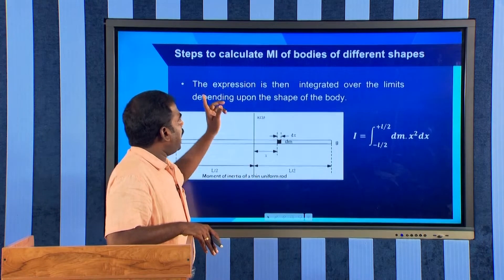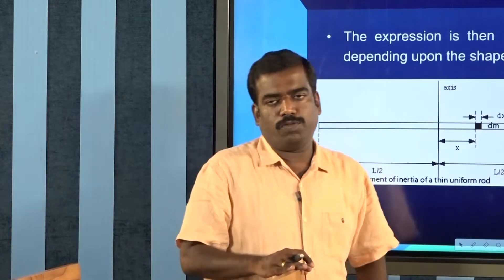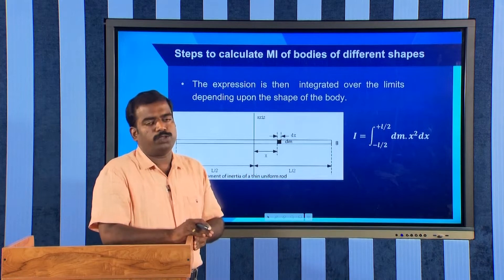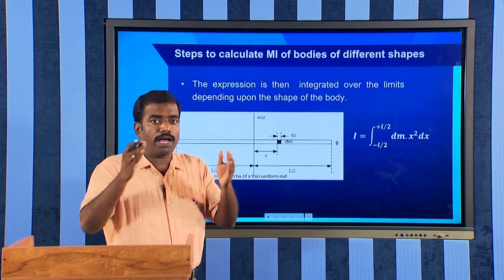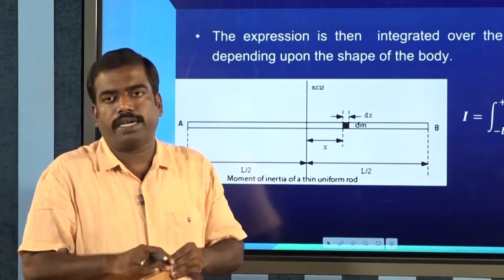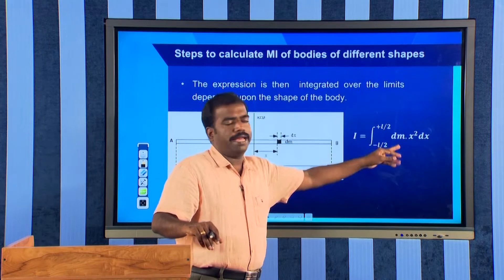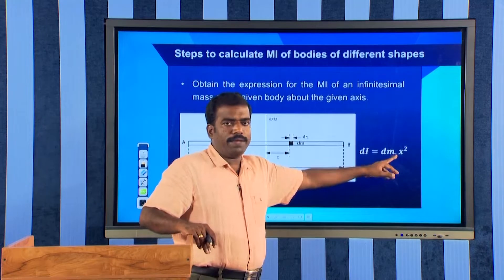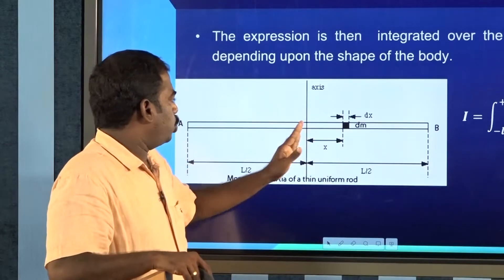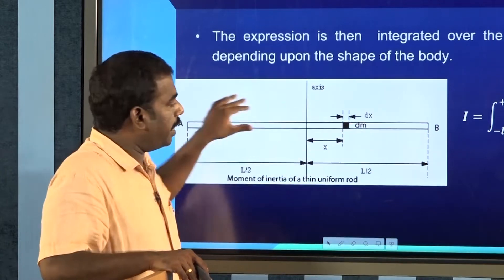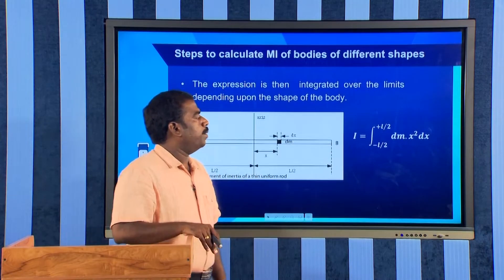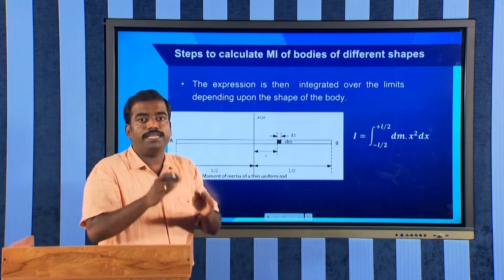The second step: integrate the expression over the limits depending on the shape of the body. The body is made up of a large number of such particles, so we take the sum — since we are considering a continuous structure, we use integration. In the previous case, the expression is dm x squared, and we integrate between the limits minus L by 2 to plus L by 2 because we are considering a rod of length capital L.